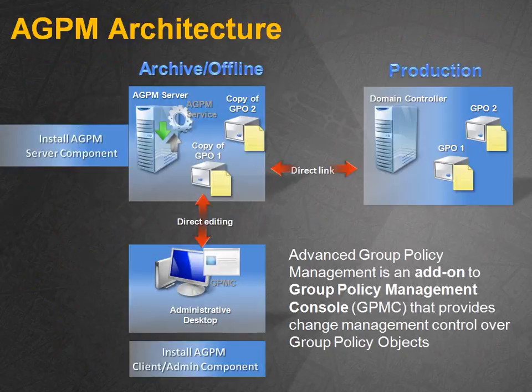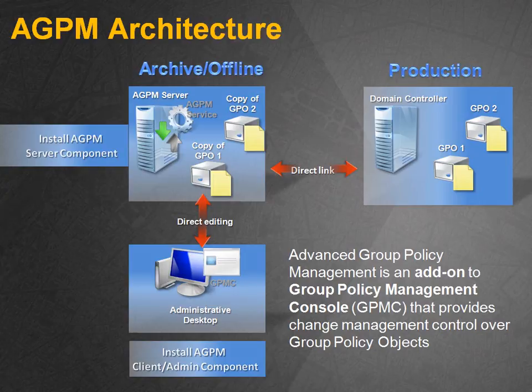Let's have a look at the architecture. This is quite crucial to understand how AGPM actually works, especially since we're going to install the server and client components shortly. On the right side we have production — one or more domain controllers on which your group policies live in the SYSVOL. The AGPM server, shown on the left side, will serve as our archive. We're going to selectively copy all or some of the group policy objects from production into this archive, so that the AGPM server can offer us those policies offline for direct editing.